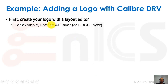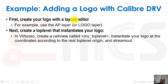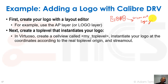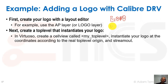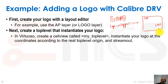First, create your logo with a layout editor — for example, use an RDL-type layer or a logo layer. We create the logo nicely in the layout editor, place it on a hi layer, and stream it out to get logo.gds. However, Calibre DRV actually requires a top-level cell on top of this. So we make another cell called a logo wrapper — or simply named 'top' — which instantiates the logo at the desired coordinates, and then stream that out to get logo.gds with a proper top-level cell.